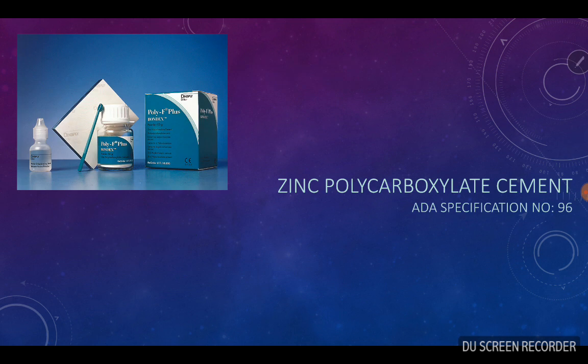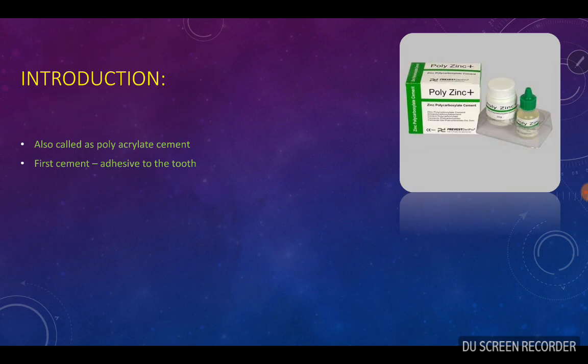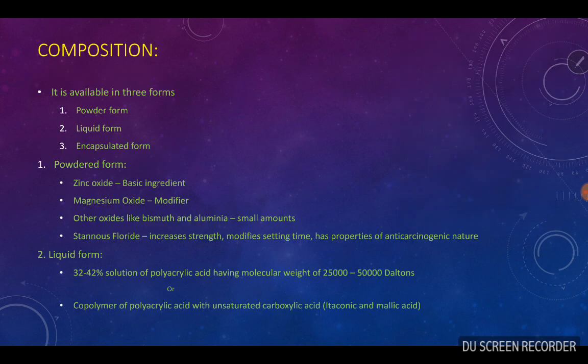To begin with, the ADS specification number for zinc polycarboxylic cement is 96. It is also called as polyacrylic cement and it is the first cement that is adhesive to the tooth, which means it can bond chemically to enamel and dentin.